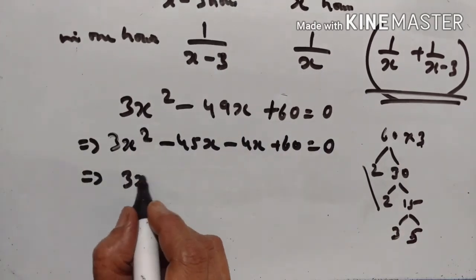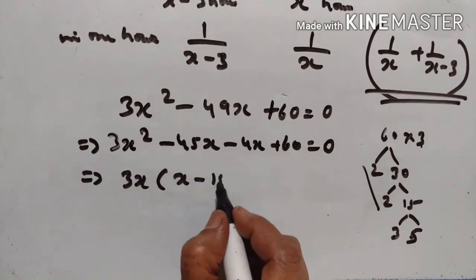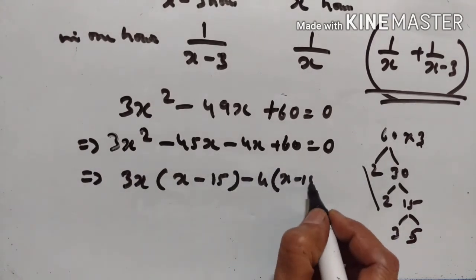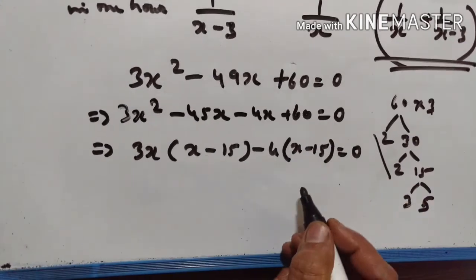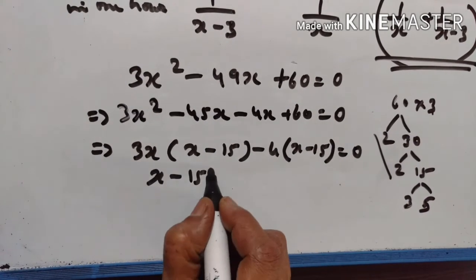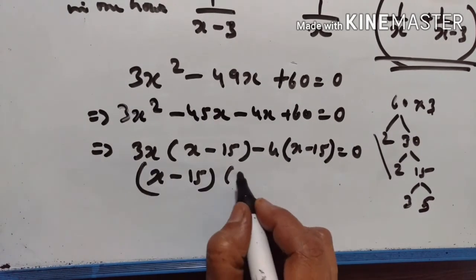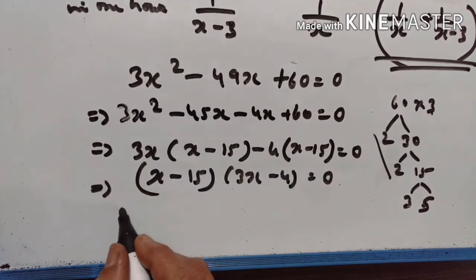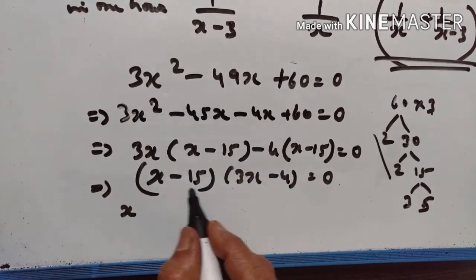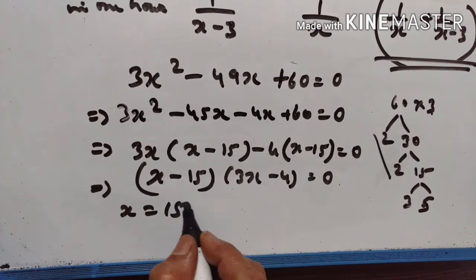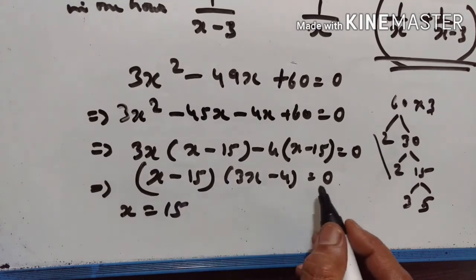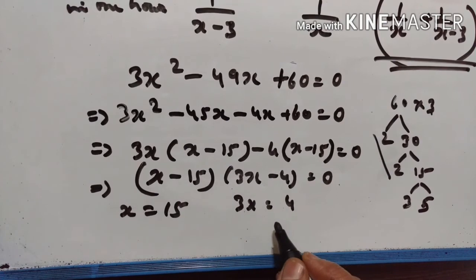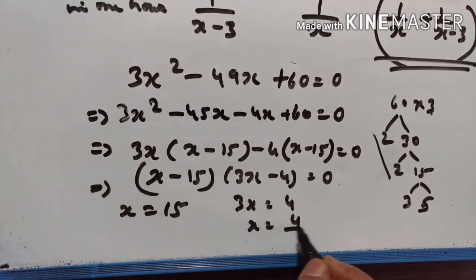Factoring: 3x(x minus 15) minus 4(x minus 15) equals zero, so (x minus 15)(3x minus 4) equals zero. Therefore x minus 15 equals zero means x equals 15, or 3x minus 4 equals zero means 3x equals 4 and x equals 4 upon 3.